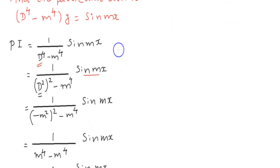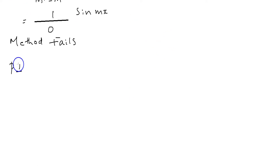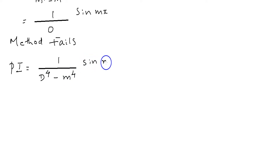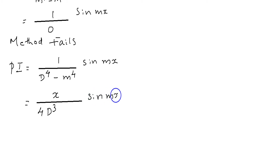So the general rule fails. Whenever the general rule fails, we switch to another method. Then the particular integral is equal to 1 by d raised to 4 minus m raised to 4 into sin mx, in which we multiply the numerator with x and the denominator is differentiated once. We get x by 4d cubed, which is the derivative of d raised to 4, and the derivative of m raised to 4 is 0, into sin mx.